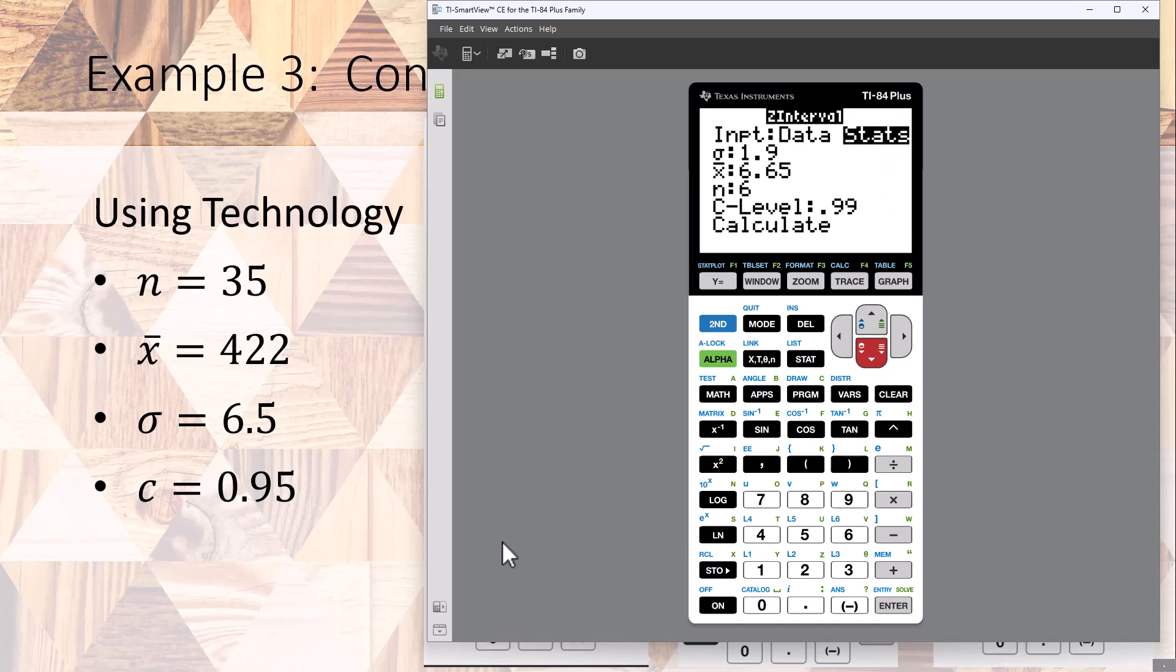Make sure your thing is on stats, go down to sigma, put in your value for sigma 6.5. Your sample mean, that actually is a typo, your sample mean should be 42.0 not 42.2. Number of samples is going to be 35, your C level is 0.95, that has to go in as a decimal.